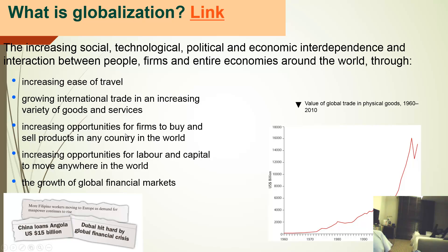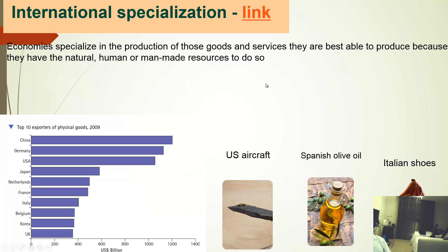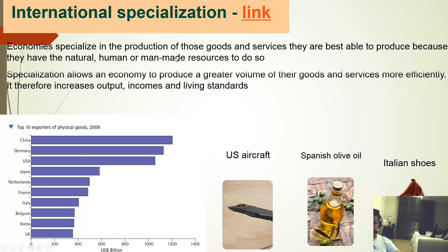Please note that Chapter 8 normally doesn't come in the exam at all — if it comes, it's usually 8.2 or 8.3 on exchange rates or current accounts, but not 8.1. This is similar to Chapter 1 in specialization, where economies specialize in the production of those goods and services they are best able to produce because they have the natural, human, or man-made resources to do so. Specialization allows an economy to produce a greater volume of goods and services more efficiently.